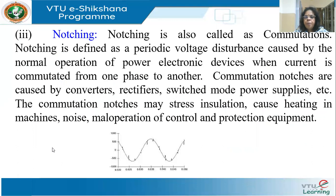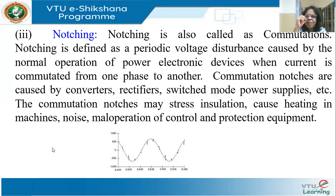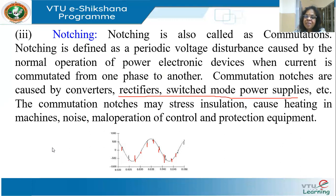Next, we have notching, also called commutation notching. In any converter like a rectifier or inverter, switches turn on and off based on a switching pattern, and a small glitch occurs whenever current is commuted from one phase to another — that is called notching. Looking at the figure, you can see these small glitches where current shifts from one switch to another. Caused by converters, rectifiers, and SMPSs, it may stress insulation and cause heating in machines. It is an inherent part of electronic switching.